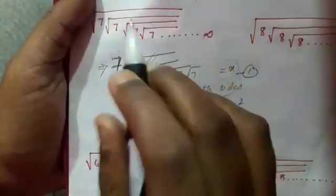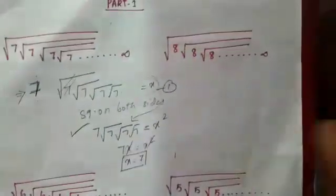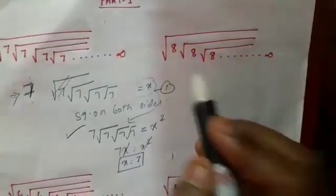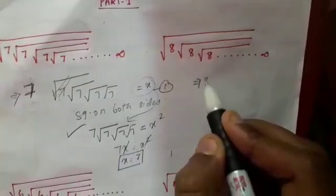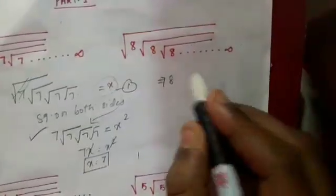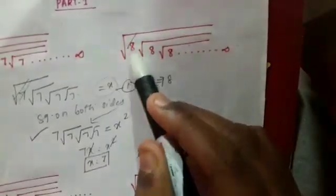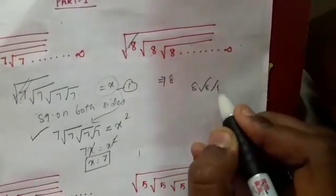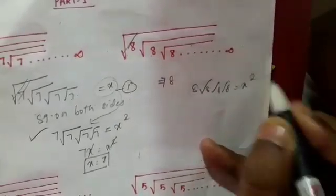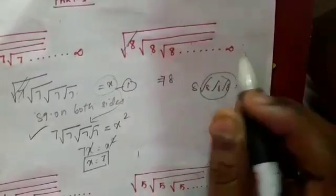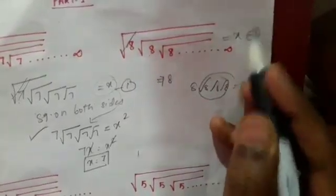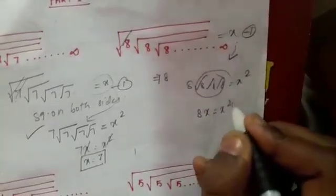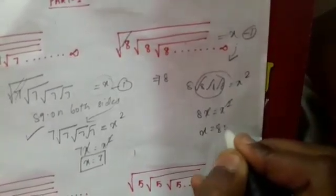So this is the shortcut. Now we have the value of infinity: root 8, root 8, root 8, root 8 until infinity. If you solve it the same way, root 8 repeated equals x squared. Substituting x, we get 8x equals x squared, so x is equal to 8.